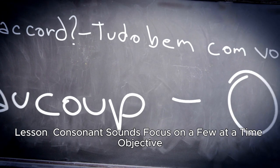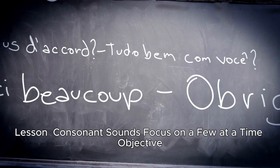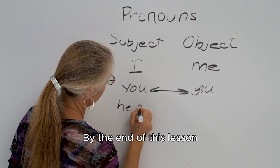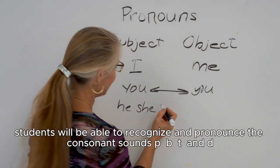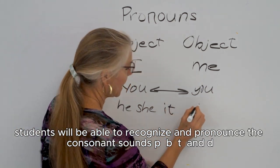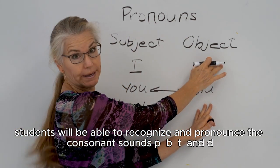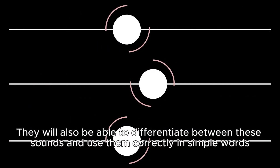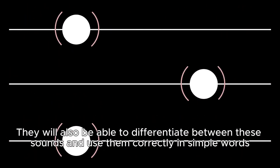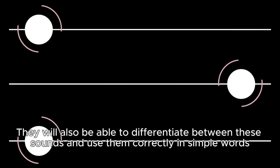Lesson: consonant sounds, focus on a few at a time. Objective: By the end of this lesson, students will be able to recognize and pronounce the consonant sounds P, B, T, and D. They will also be able to differentiate between these sounds and use them correctly in simple words.